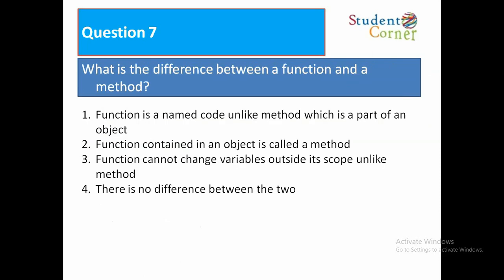What is the difference between a function and a method? Option 1: Function is a named code unlike method which is a part of an object. Option 2: Function contained in an object is called a method. Option 3: Function cannot change variables outside its scope like method. Option 4: There is no difference between the two. The answer is option 1. Function is a named code unlike method which is a part of the object.